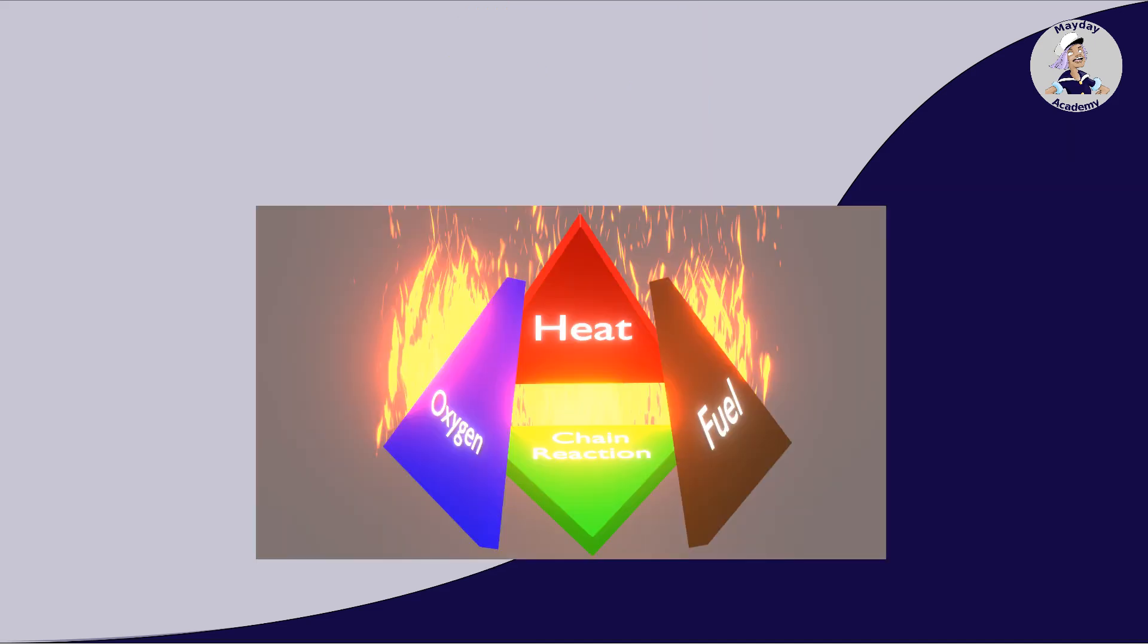Nowadays, a fourth factor is mostly considered: the presence of an unimpeded chemical chain reaction. This approach is known as the fire tetrahedron.